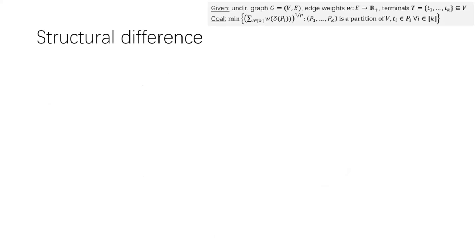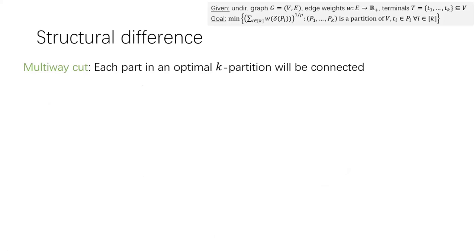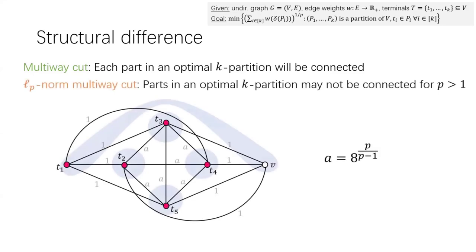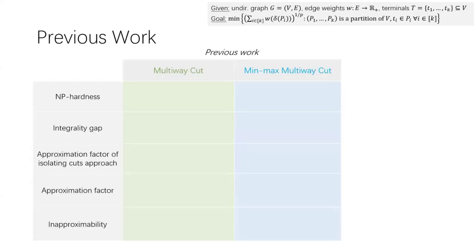There is a fundamental structural difference between the case of p equals one and p greater than one. For p equals one, that is for the vanilla multi-way cut, one can show that each part in an optimal k-partition will be connected after removing the edges crossing the partition. Multi-way cut is also phrased as the problem of removing a least-weight subset of edges to disconnect every pair of terminals. But this is no longer true for p greater than one — the parts in an optimal k-partition may not be connected after removing the edges crossing the partition.